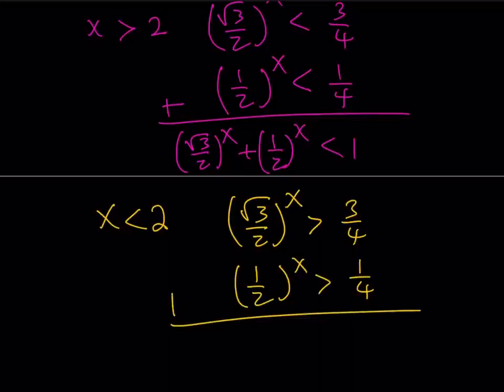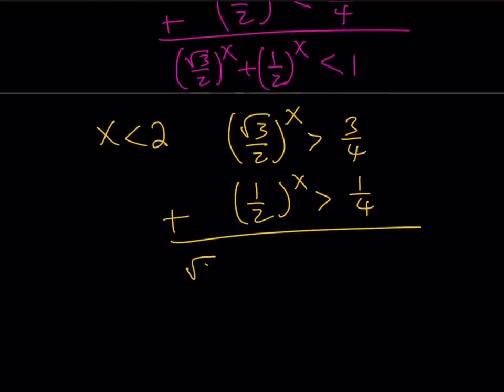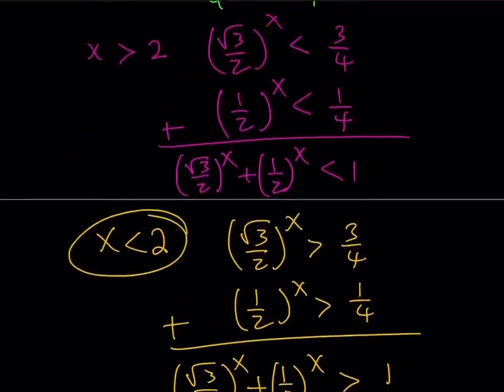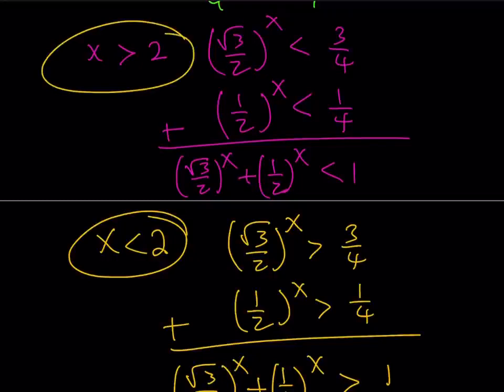So, their sum, their sum, which is the left-hand side of our equation, root 3 over 2 to the power x, plus 1 half to the power x is going to be greater than 1. What is that supposed to mean? We want it to equal 1, but it's just like less than 1 or greater than 1, which means that anything in this interval is not going to be a solution. So, if x is less than 2, there are no solutions. If x is greater than 2, there are no solutions. If x is equal to 2, then we have a solution. And that is the only solution.